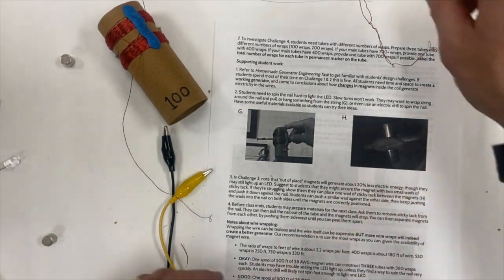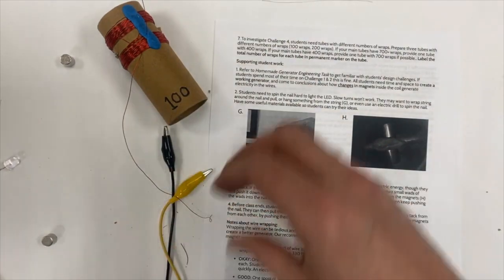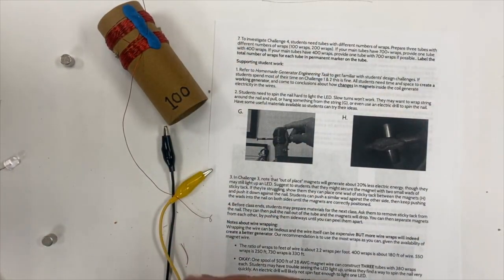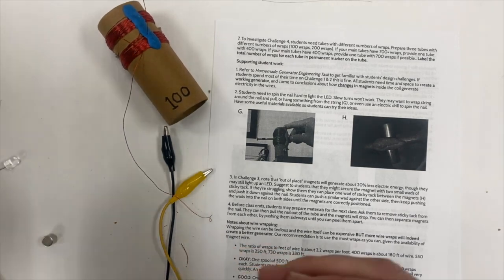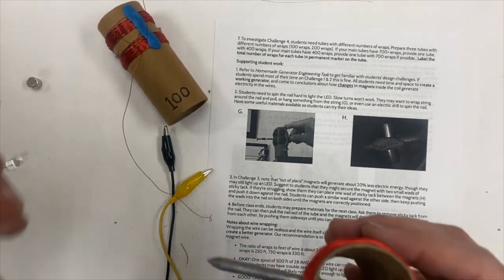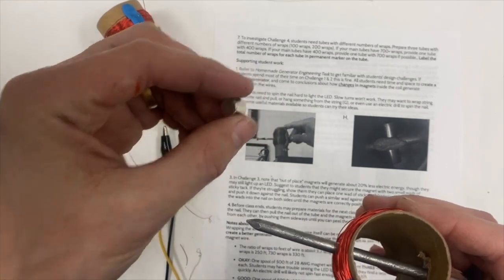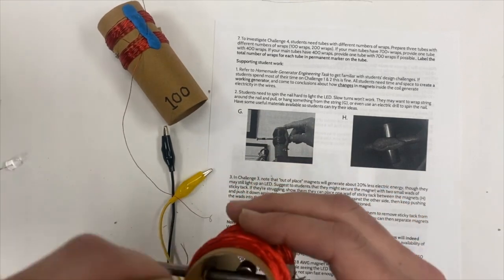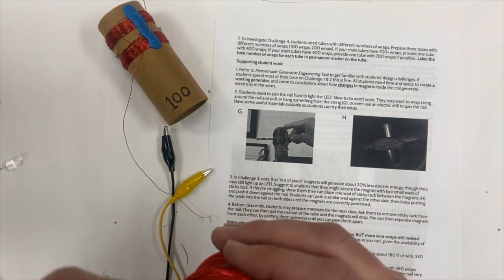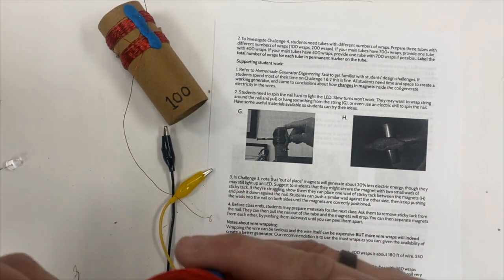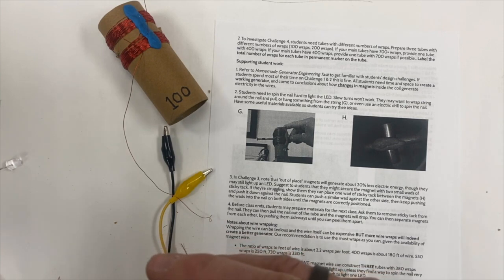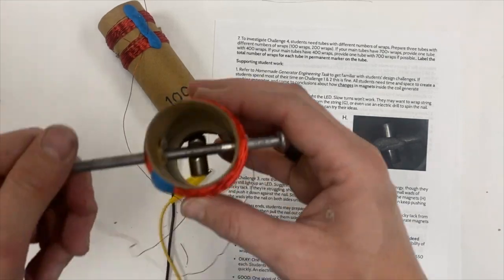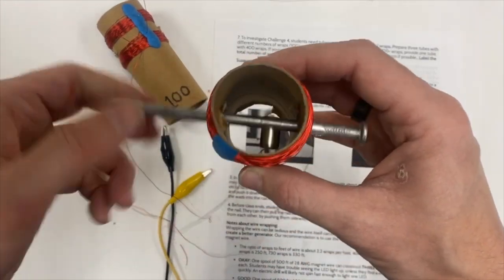Moving on to this one last thing: when students actually make this, they're going to try a few things but they're going to end up with something that looks like this. This is where knowing the side of the magnets comes into play. I need to make sure that the arrangement of the magnets is conducive to actually causing a change in magnetic field as I spin the nail.